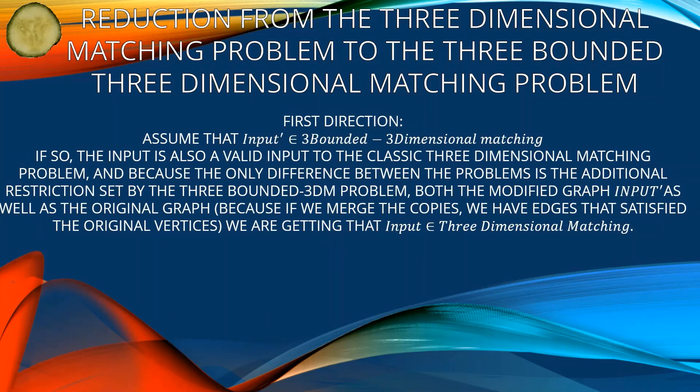First direction: Assume that input prime is in 3-bounded 3-dimensional matching. If so, the input is also a valid input to the classic 3-dimensional matching problem. Because the only difference between the problems is the additional restriction set by the 3-bounded 3DM problem, both the modified graph input prime as well as the original graph — since if we merge the copies we have edges that satisfy the original vertices — we get that input is in 3-dimensional matching.